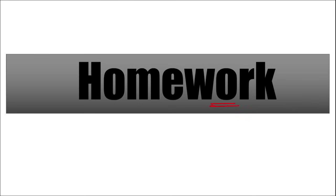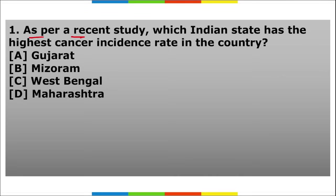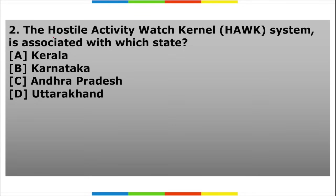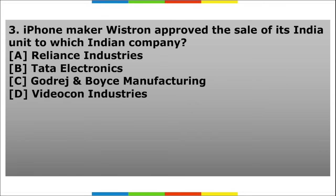Homework questions: First, as per a recent study, which Indian state has the highest cancer incidence rate in the country? Second, the Hostile Activity Watch Kernel — HAWK system — is associated with which state, which force launched it, and what was the reason for its launch? Third, iPhone maker Wistron approved the sale of its Indian unit to which Indian company?